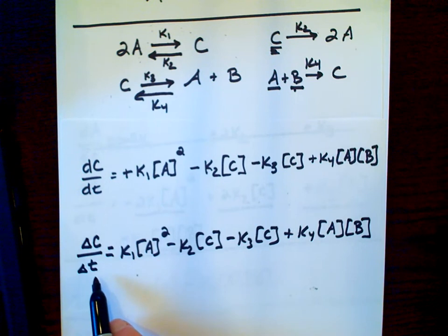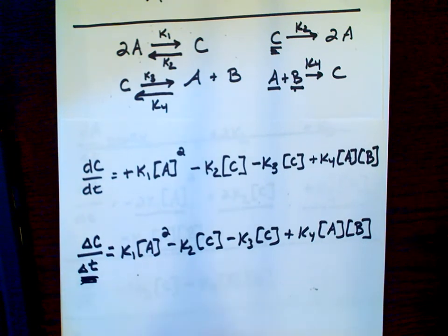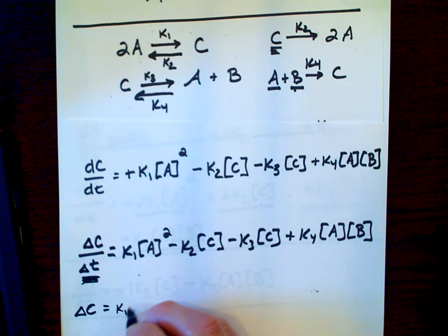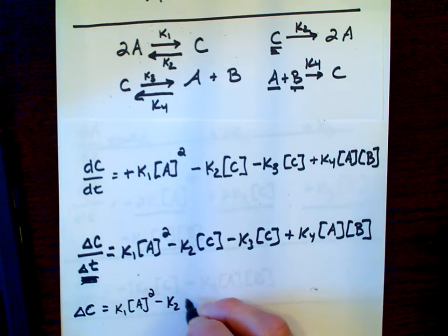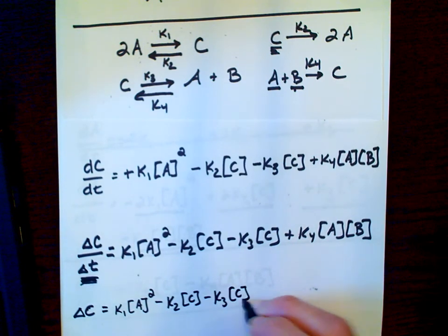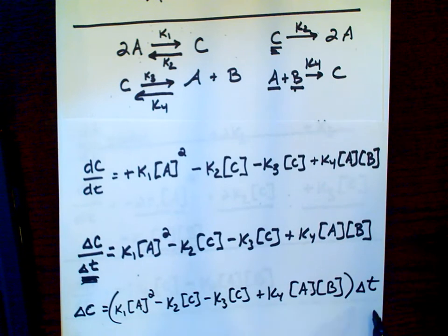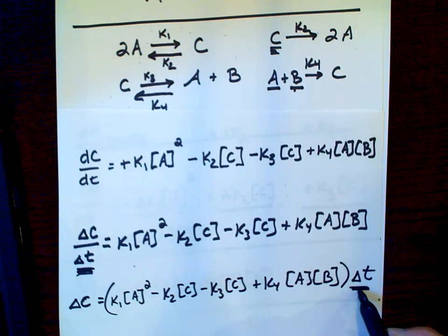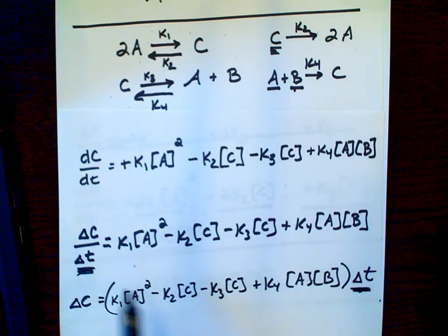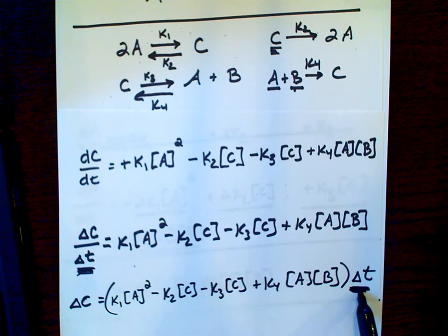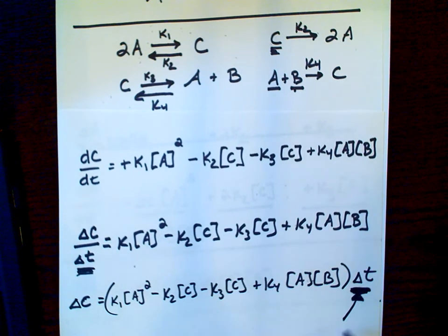In Excel we can't do infinitesimally small changes — only incremental changes. So instead of dC/dt, we use ΔC/Δt. We multiply both sides by delta T, whatever we set our incremental time unit to. Our change in concentration of C per time increment is then this four-term expression multiplied by the time increment we choose. Squeezing the time increment down as small as possible gives better values, but in Excel the smaller you make delta T, the more rows it takes to calculate changes over longer periods of time.